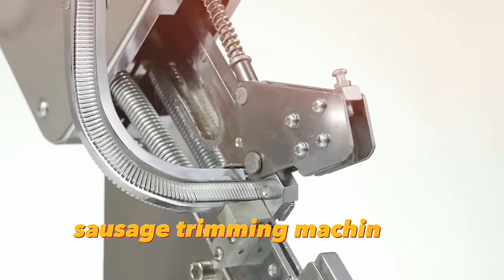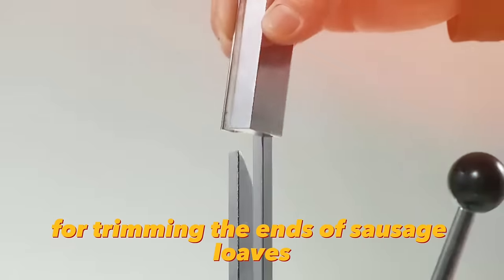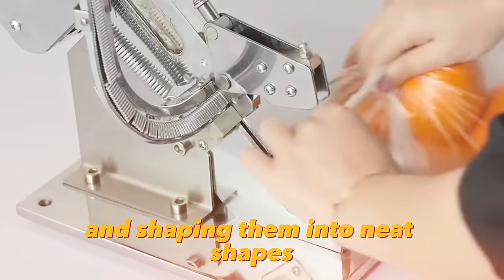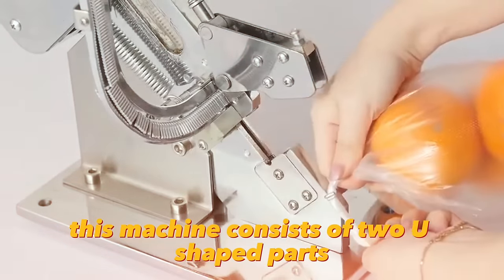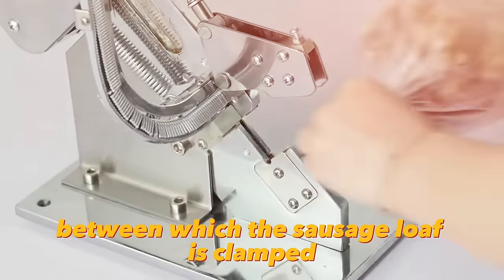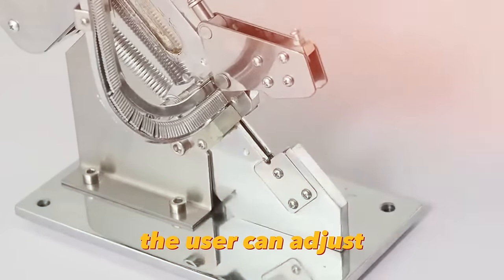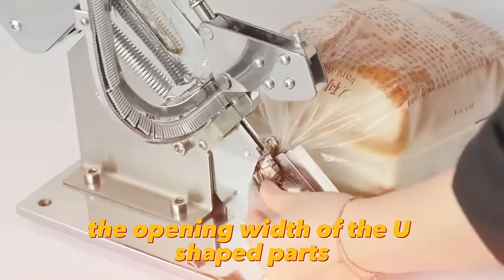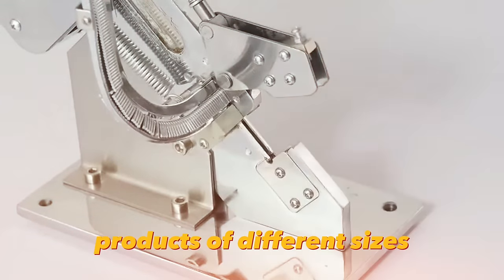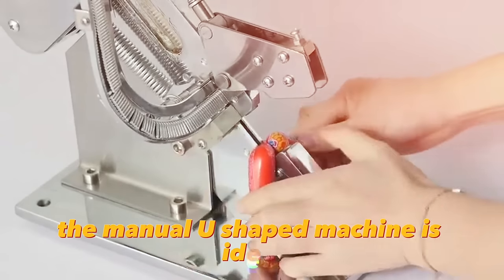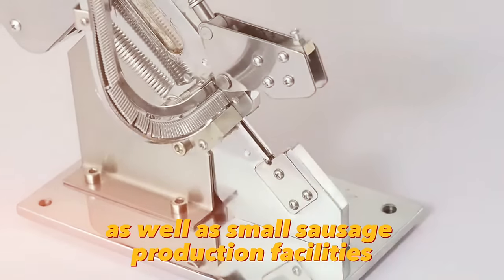The manual U-shaped sausage trimming machine is a simple and handy tool for trimming the ends of sausage loaves and shaping them into neat shapes. This machine consists of two U-shaped parts between which the sausage loaf is clamped. By means of a manual mechanism, the user can adjust the opening width of the U-shaped parts, which allows the machine to be used to work with sausage products of different sizes. The manual U-shaped machine is ideal for use in the home as well as small sausage production facilities.